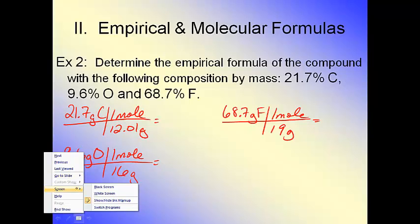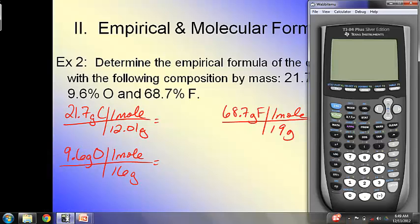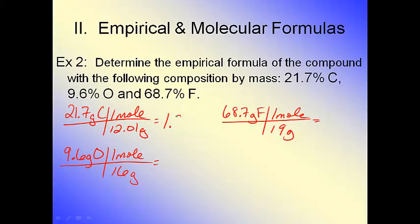Now I finally go to my calculator and say, okay Mr. Calculator, show me some numbers. So I got 21.7 divided by 12.01, let's punch them all in before I start rattling off numbers here. 9.6 divided by 16, and 68.7 divided by 19. Hopefully you're going to help me remember these numbers: 1.806, 0.6, and 3.62.